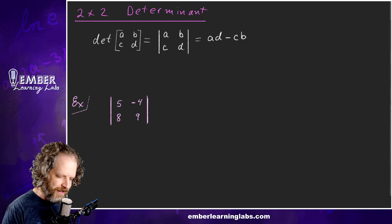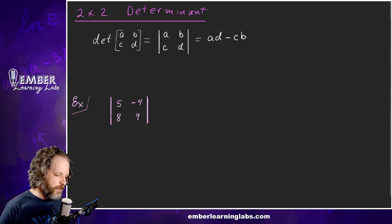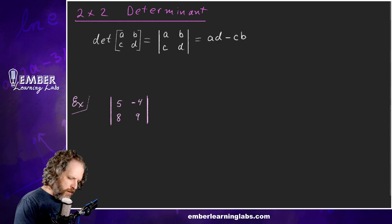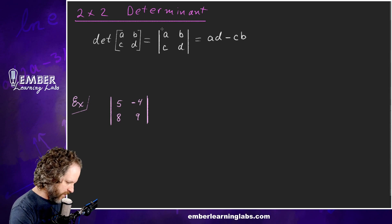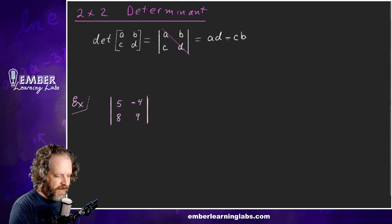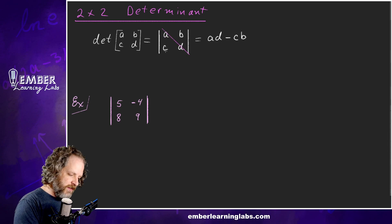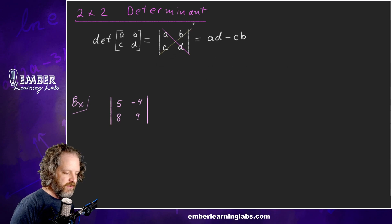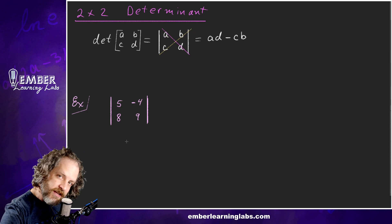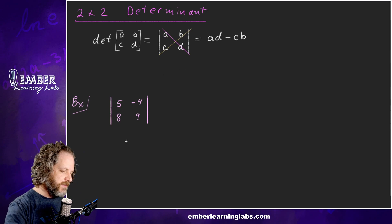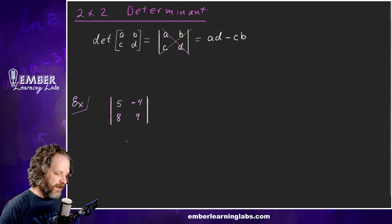So what we do is we take and multiply down the diagonal — A times D — and then subtract the going-up diagonal. So the determinant equals A times D minus C times B.